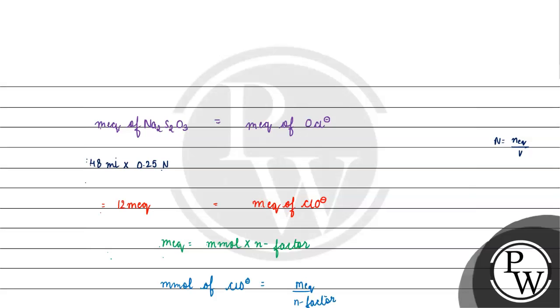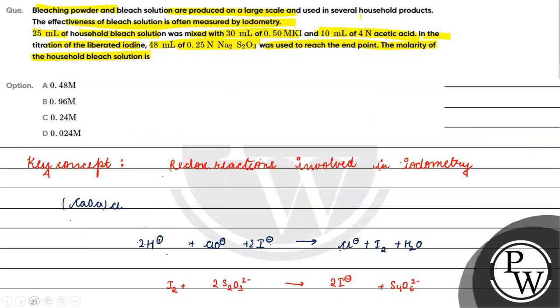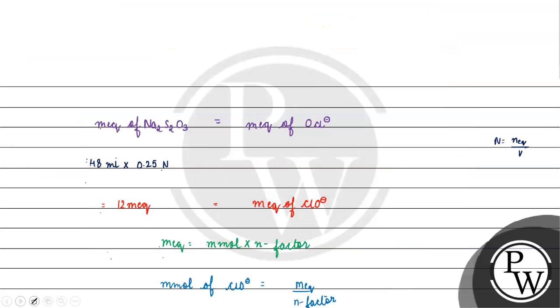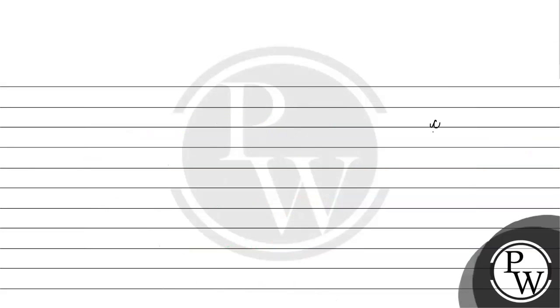We don't have n-factor. How will we find it? For the conversion ClO- to Cl-, we need to find oxidation state. In ClO-, oxidation state of chlorine is +1, and in Cl- it's -1. So n-factor is 2.